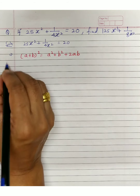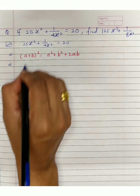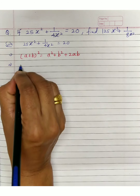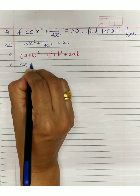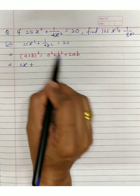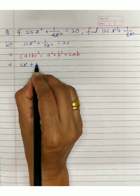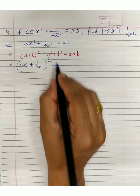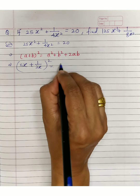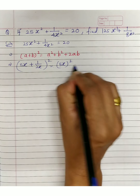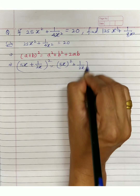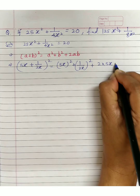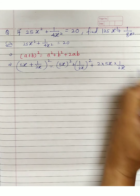Even if you don't rearrange it doesn't make much difference — we just go faster this way. For A² = 25x², A should be 5x. For B² = 1/(4x²), B should be 1/(2x). So the expansion becomes (5x)² + (1/(2x))² + 2 × 5x × (1/(2x)).